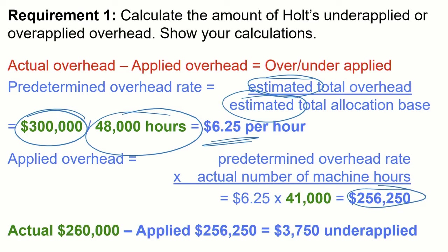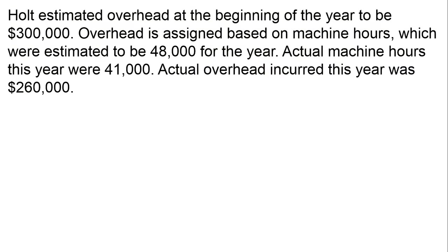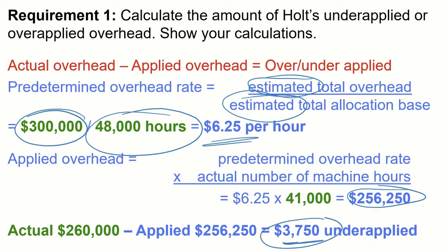We have actual overhead of $260,000 and applied overhead of $256,250. The answer to requirement one is $3,750 underapplied — we actually incurred more overhead than was applied during the year. Going back to the information given: $300,000 estimated, 48,000 estimated machine hours, $260,000 actual overhead, and 41,000 actual machine hours. We just need to use the right numbers in the right way. That's our $3,750 underapplied overhead.